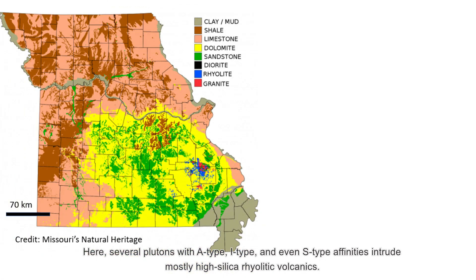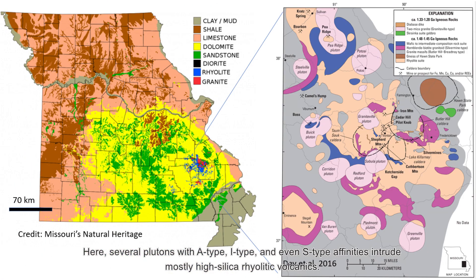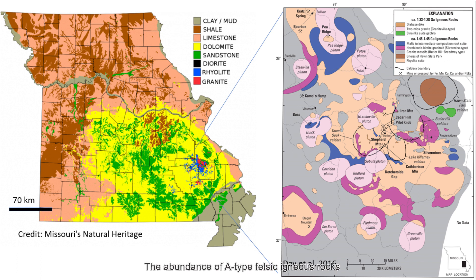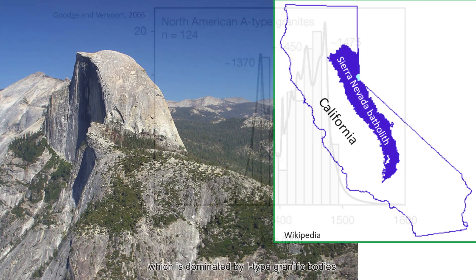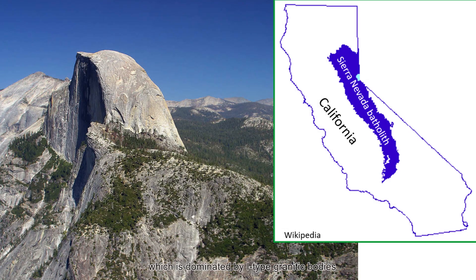Here, several plutons with A-type, I-type, and even S-type affinities intrude mostly high-silica rhyolitic volcanics. The abundance of A-type felsic igneous rocks in particular makes it difficult to compare the southern Granite Rhyolite Province with Phanerozoic convergent margin suites like the Sierra Nevada batholith of California, which is dominated by I-type granitic bodies.